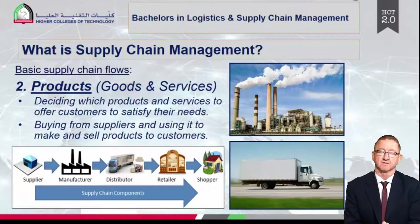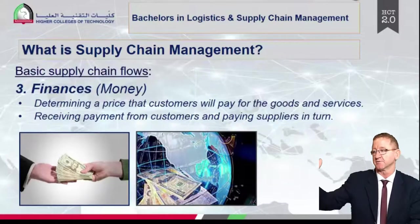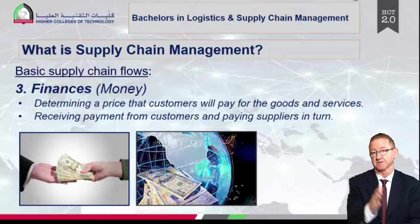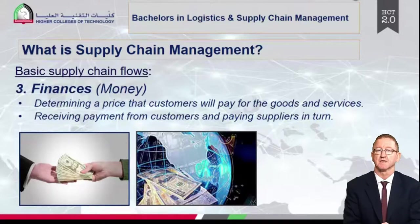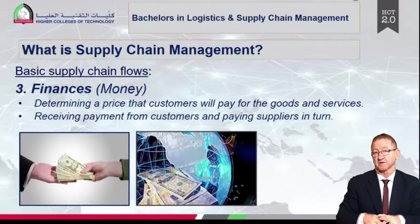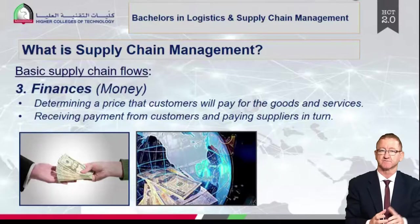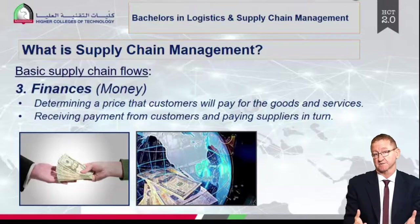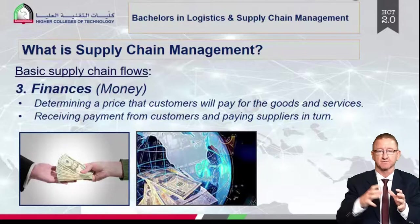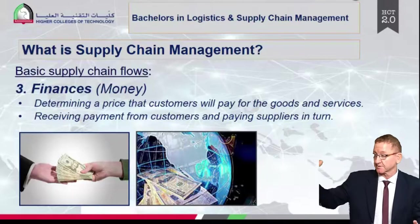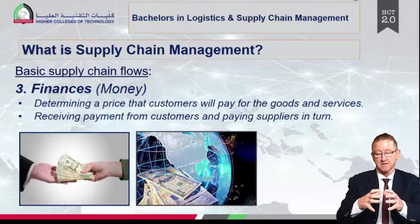The third supply chain flow is finance or money. Once the customer buys the product, the customer pays the retailer, who in turn pays the distributor, who pays the manufacturer — so the finance flow goes from the customers upstream towards the suppliers. In some cases the supply chain flows can go in both directions. For example, information flows both ways, and if products are damaged, they come back from the customer to the manufacturer to be reworked.